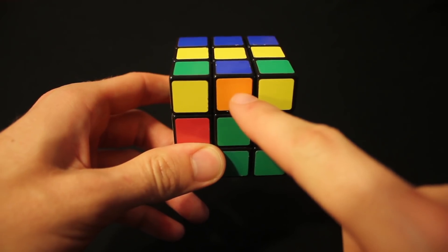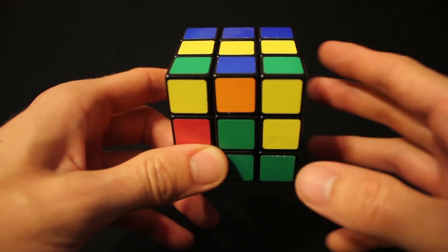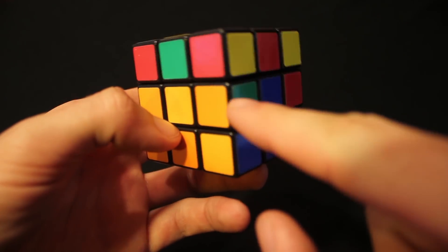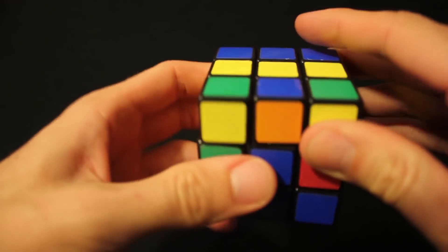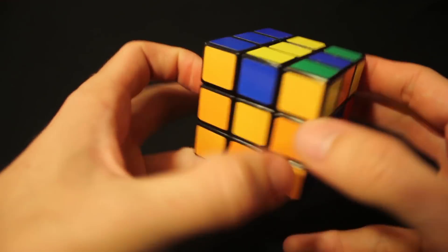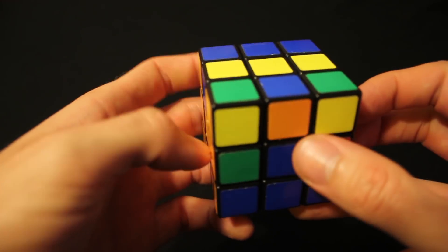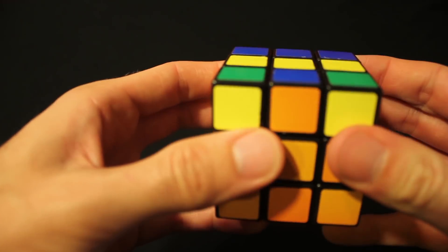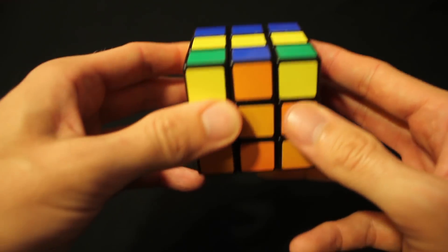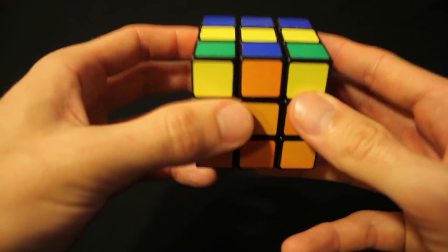So this blue and orange piece needs to go here. So what we're going to do is align it until the point where the orange is aligned with the orange. So even though this could be correct, it's still wrong because the edge needs to be aligned with its correct color, in this case orange.